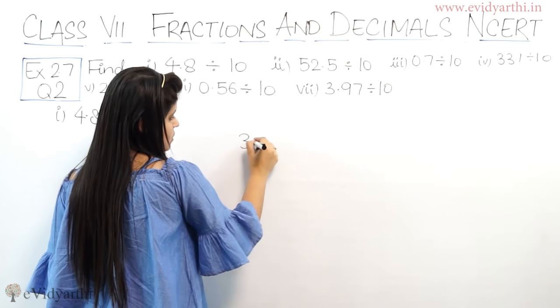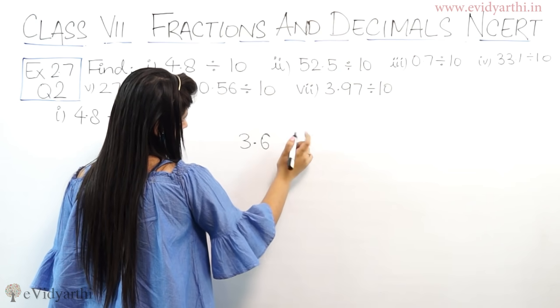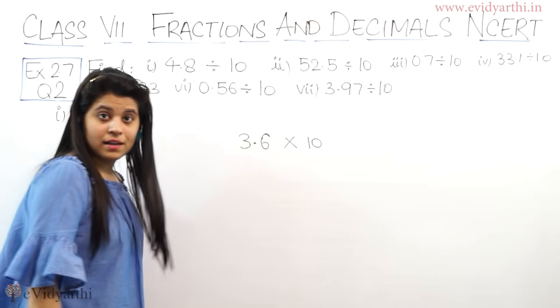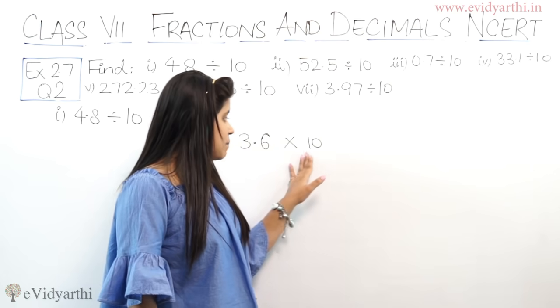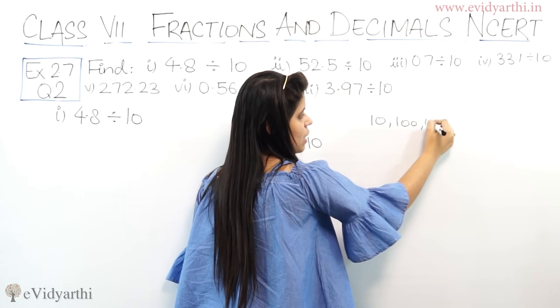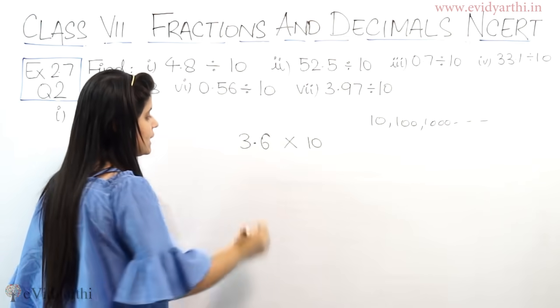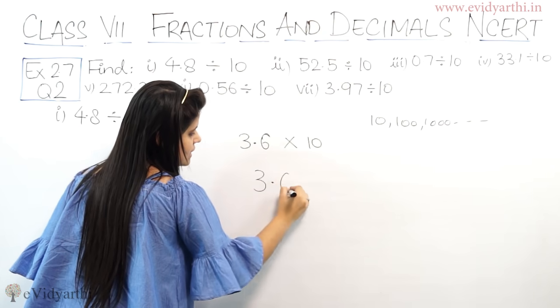Let's suppose 3.6 multiplied by 10. So we need to find 10, 100, 1000 and so on. So this is the decimal, like 3.6.